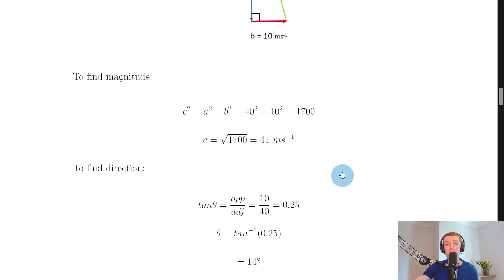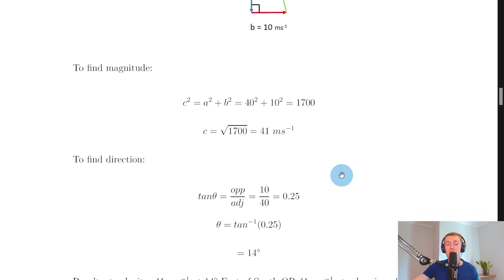So remember we need to find both the magnitude and the direction for our resultant velocity. So we can use Pythagoras c squared equals a squared plus b squared and we can plug in the numbers to get 40 squared plus 10 squared and that will give you 1700 in your calculator and then you can square root that to find c the magnitude of the unknown side.